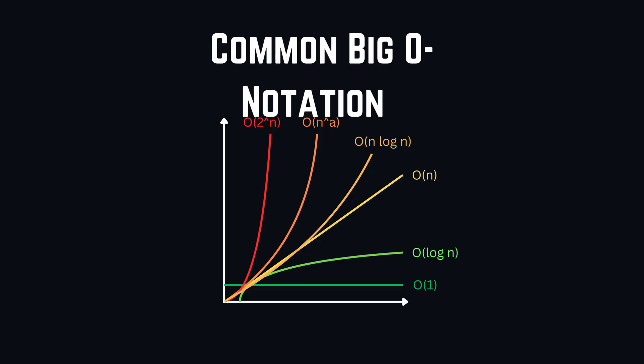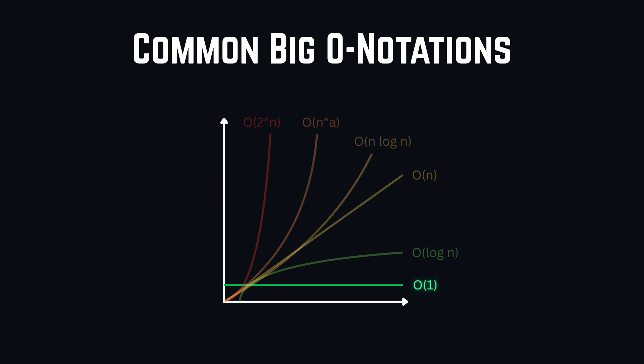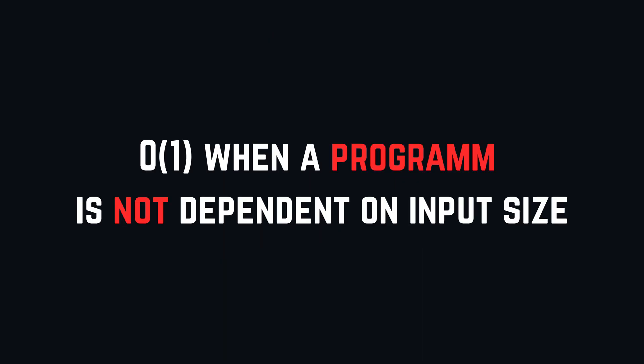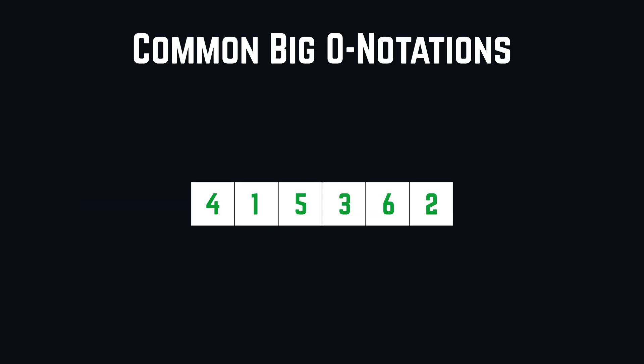Alright, then let's talk about the most common big O notations that appear. The first one and fastest one is O of 1, constant time. This is the case when the program is not dependent on the input size. For example, when we would access an element in an array.